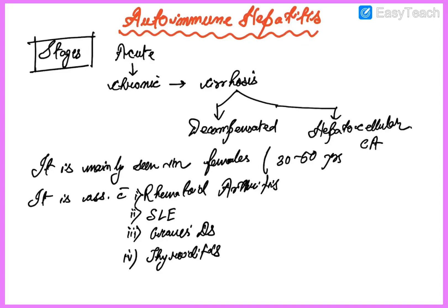Hello friends, welcome to my channel. Today I will be discussing autoimmune hepatitis. The stages of autoimmune hepatitis start with acute, then chronic, then cirrhosis, then decompensated, and finally hepatocellular carcinoma. It can convert from acute to chronic, then to cirrhosis, and ultimately to cancer or decompensated stage. It is mainly seen in females within the age of 30 to 50 years.